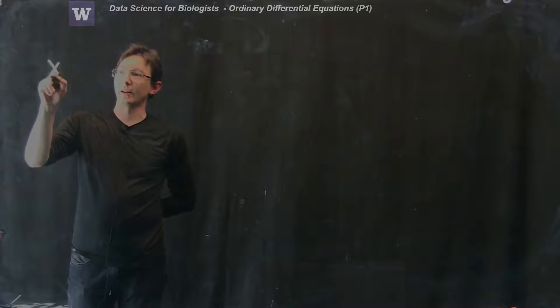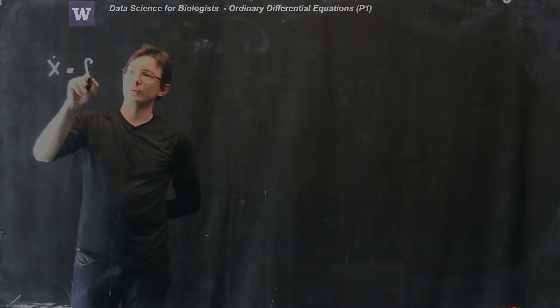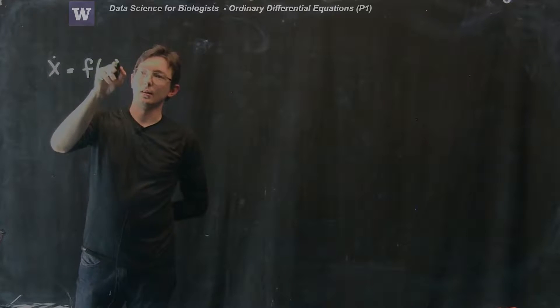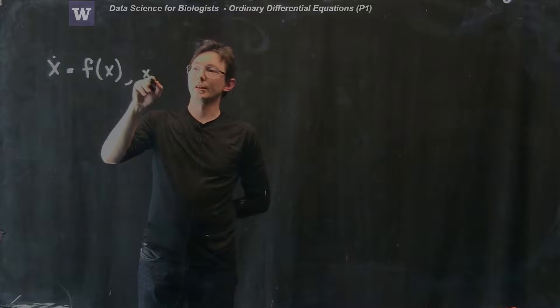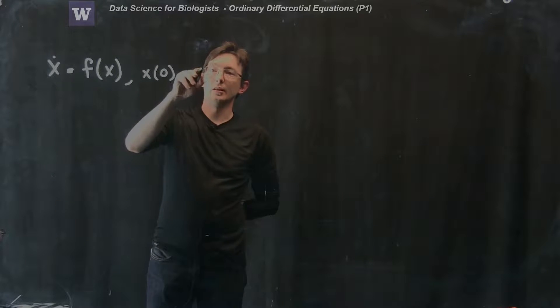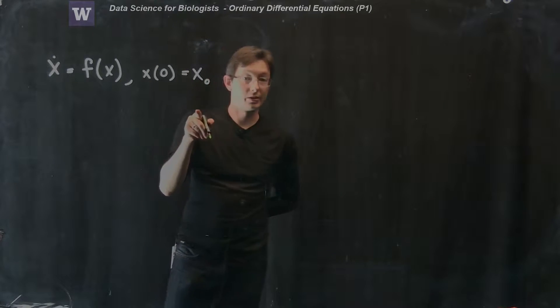So we write some vector x dot equals some function of x, and we also need to specify an initial condition x at time 0 equals a vector x naught of initial conditions.